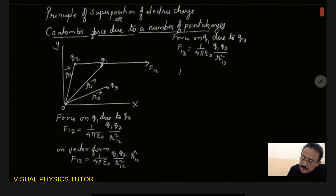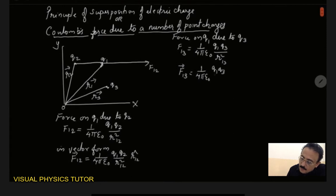Now in vector form, this can be written as F13 is equal to 1 by 4 pi epsilon 0, q1 q3 by r13 square, r13 cap.